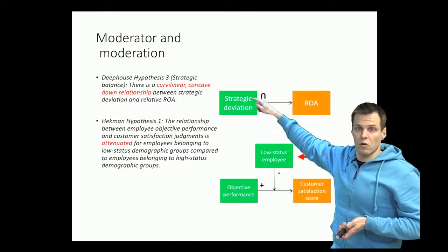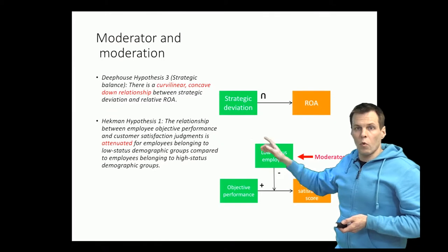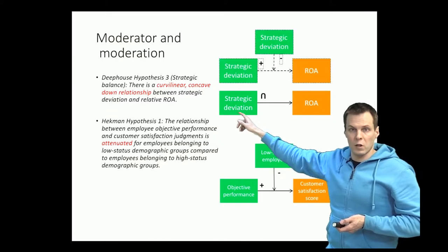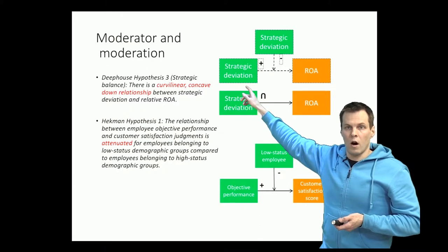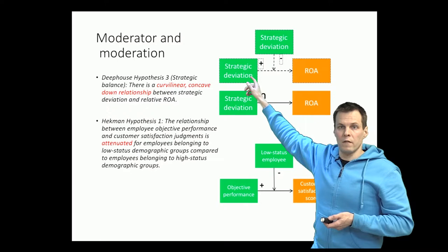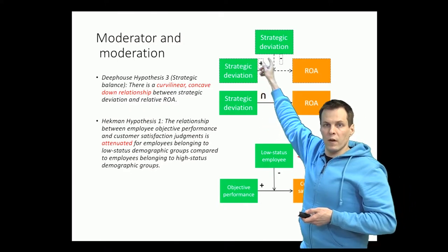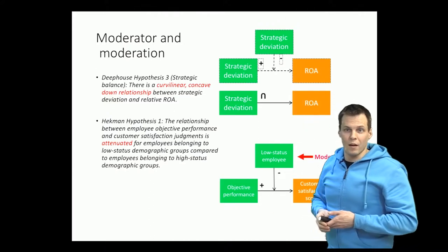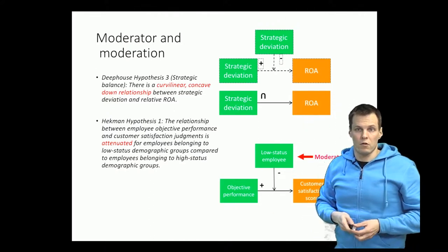Why this is an interaction effect is because the effect of strategy deviation on ROA depends on itself. Initially it's positive, but when strategy deviation value increases, then this relationship turns negative. So that's a way of making u-shape effects using interactions.